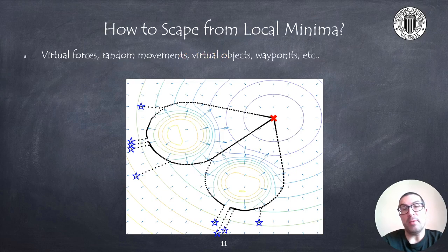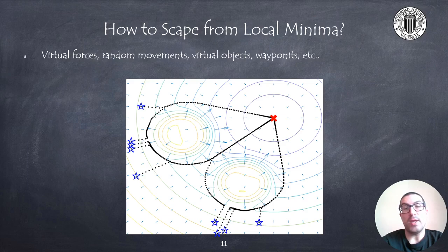Local minima are equilibrium points. However, we can escape from such equilibrium points by adding some kind of energy, such as a little push to one side or another, that might be enough to reach the goal configuration.